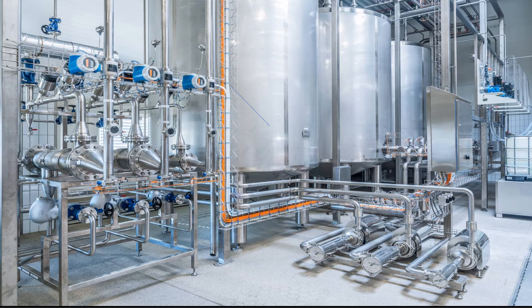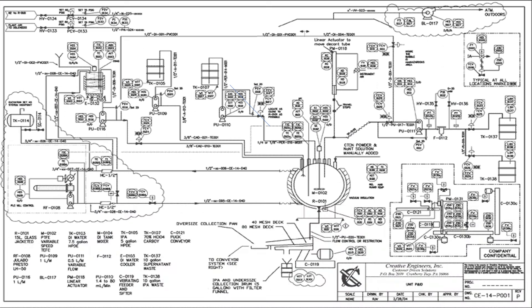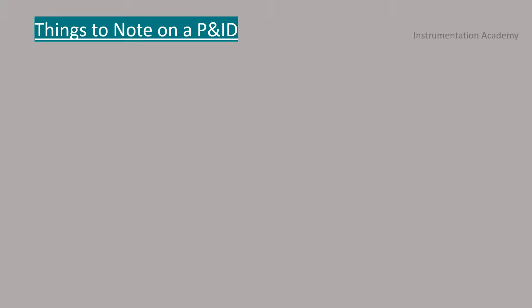This picture shows a part of a process plant. The P&ID of such a plant will be like this. Now let's discuss some important things to note on a P&ID.